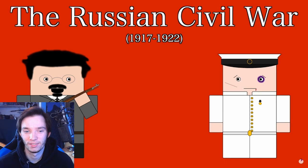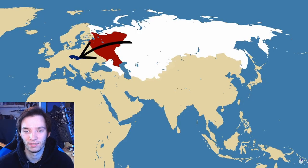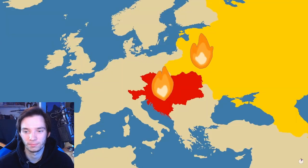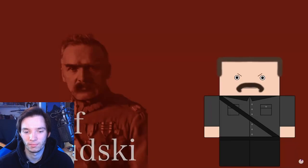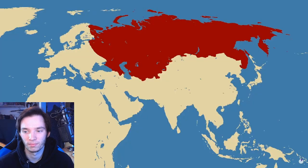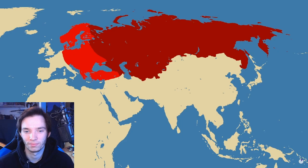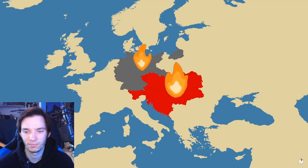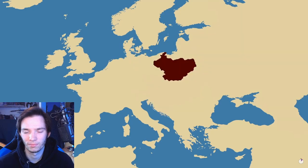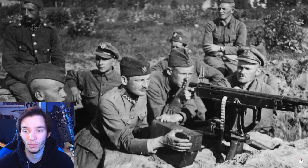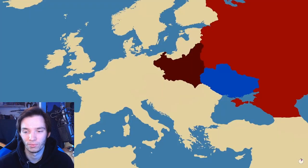Eventually it became clear to the Allies that the Bolsheviks were going to win. The Allies withdrew, and the Czechoslovakian Legion returned to Czechoslovakia, which was independent by then. The collapse of the Russian and Austro-Hungarian empires meant many peoples in Eastern Europe were looking to establish their own nations and borders. The Polish, led by Józef Piłsudski, invaded Ukraine and captured Kiev. The Bolsheviks counter-attacked and forced the Polish all the way back to Warsaw, but the Polish repulsed the attack, maintaining their independence and stopping Bolshevik forces from entering Germany. Ukraine and Belarus became socialist republics — essentially Russian puppet states.